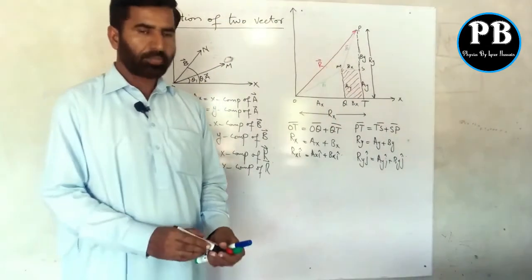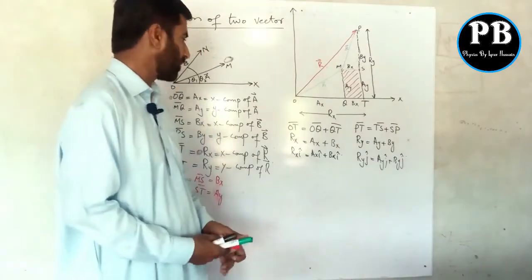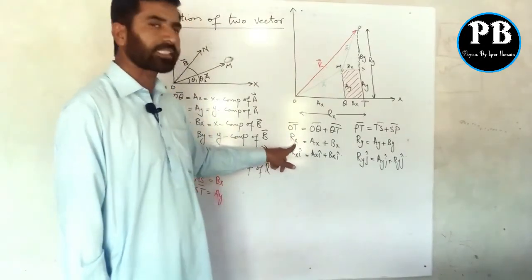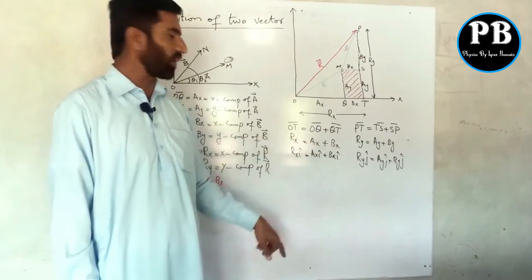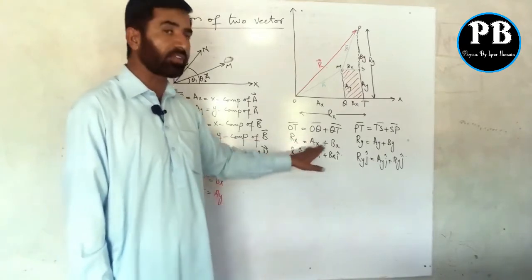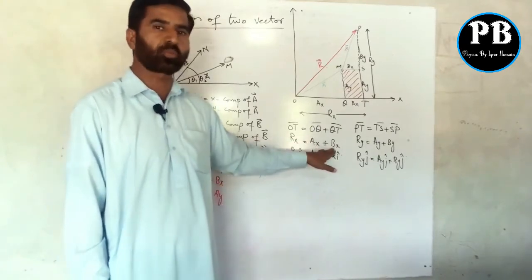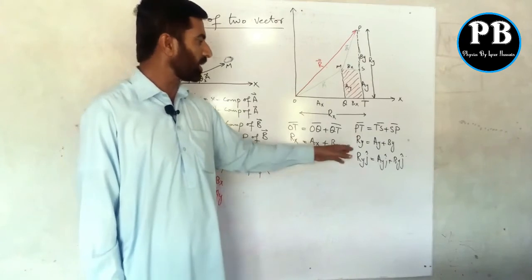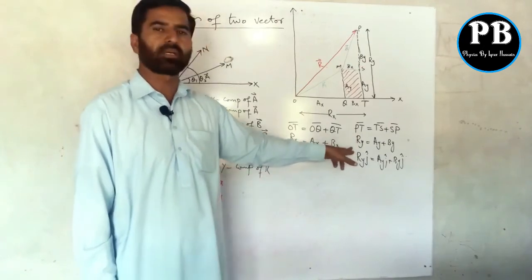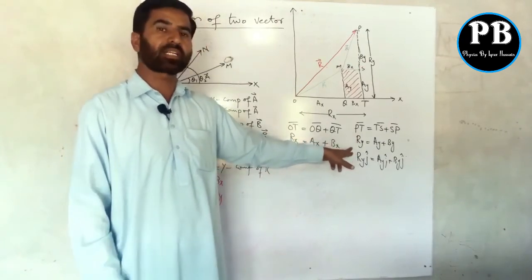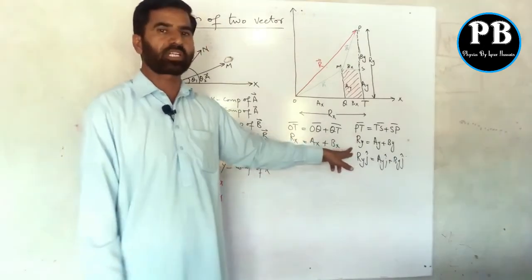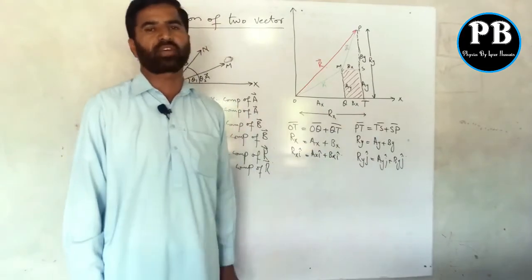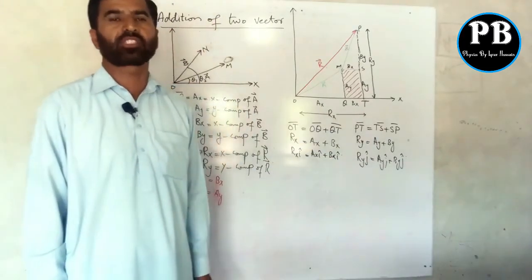From this we observe: the resultant x-component equals the vector sum of all the x-components of the vectors which are to be added, and similarly the resultant y-component equals the vector sum of all the y-components of all the vectors which are to be added.